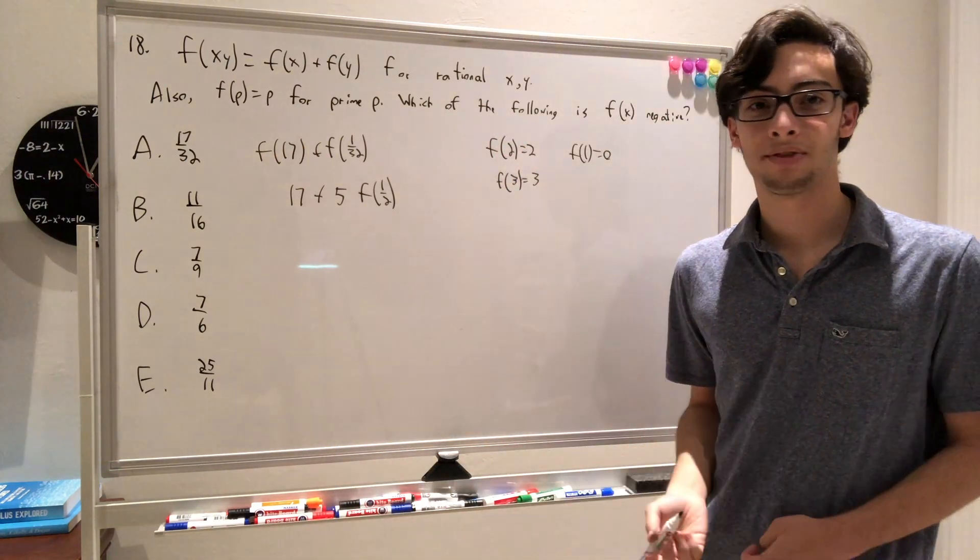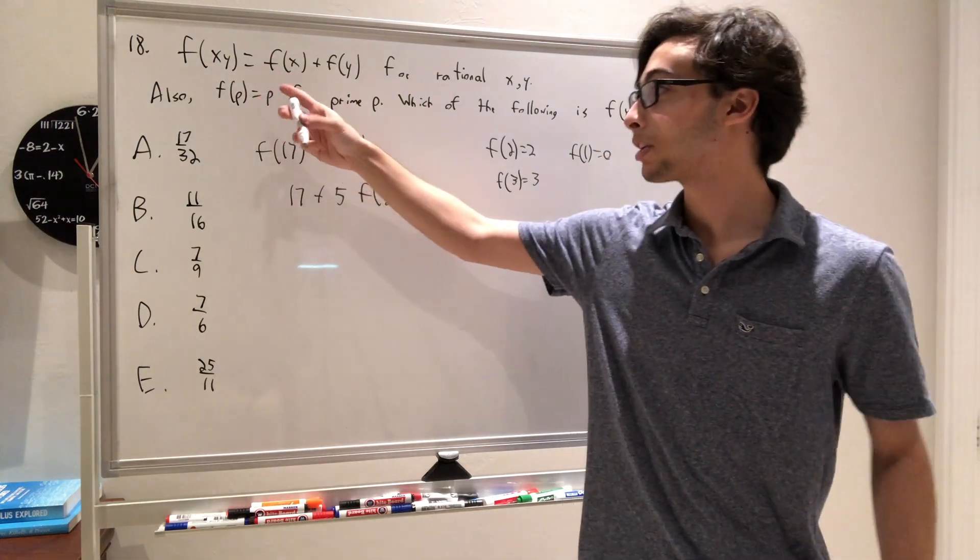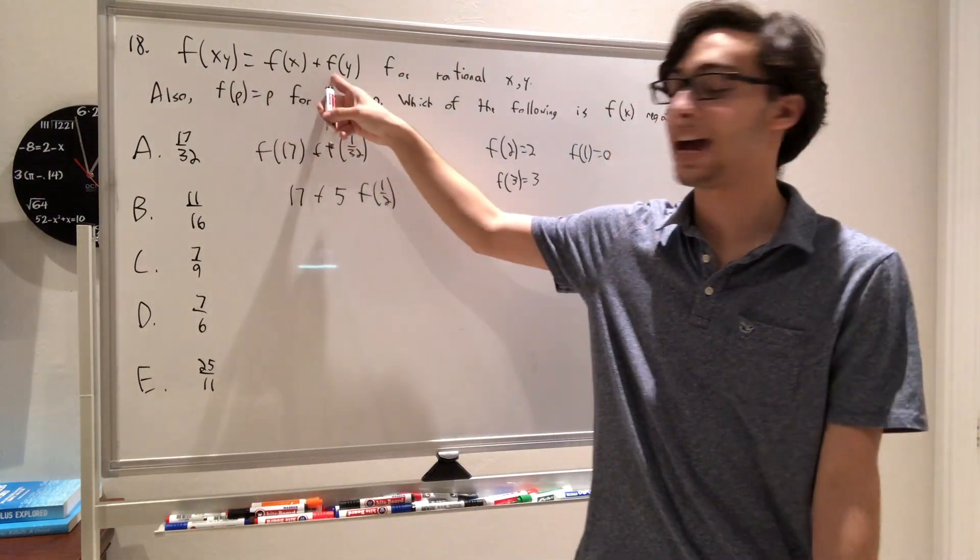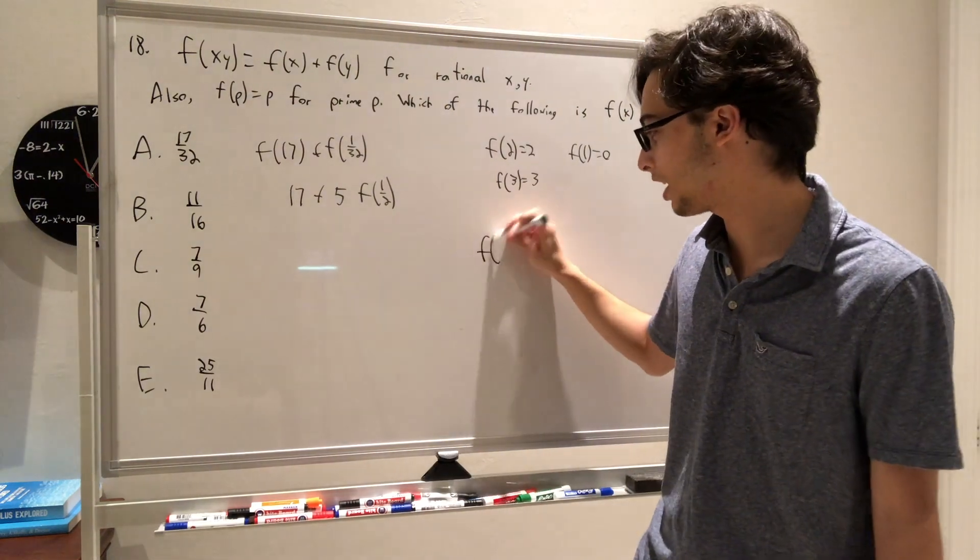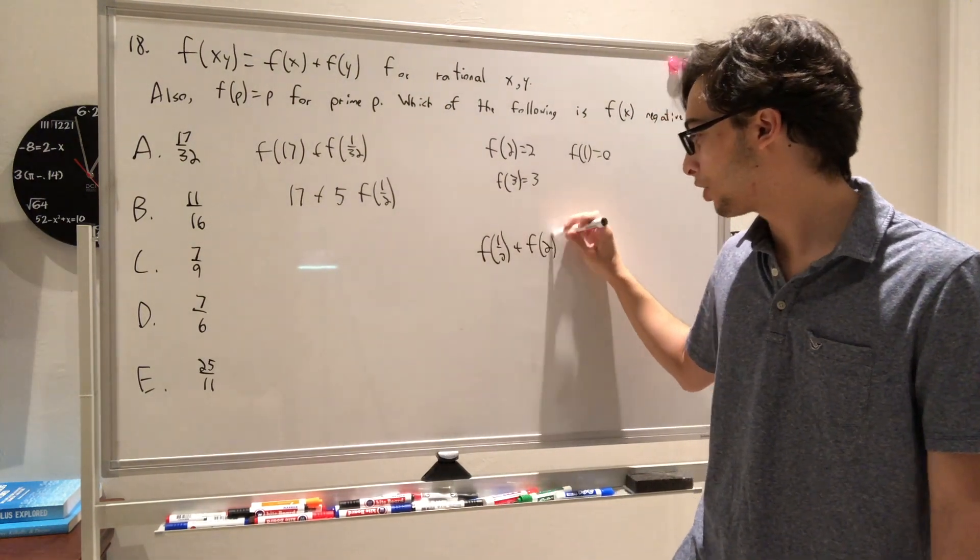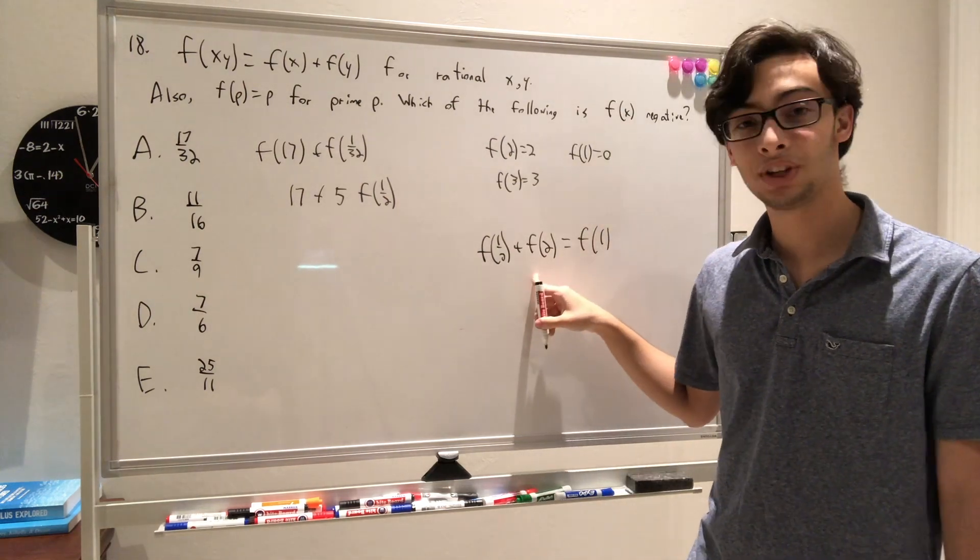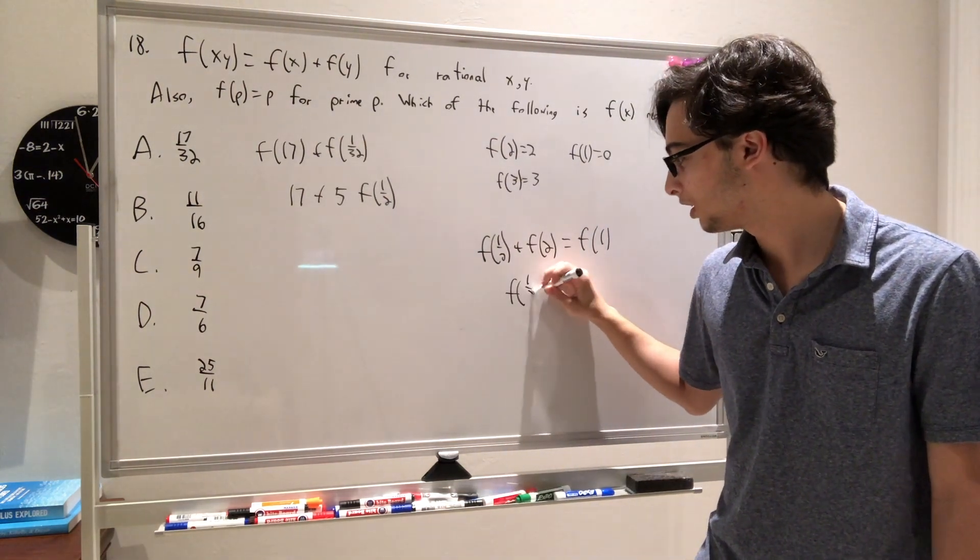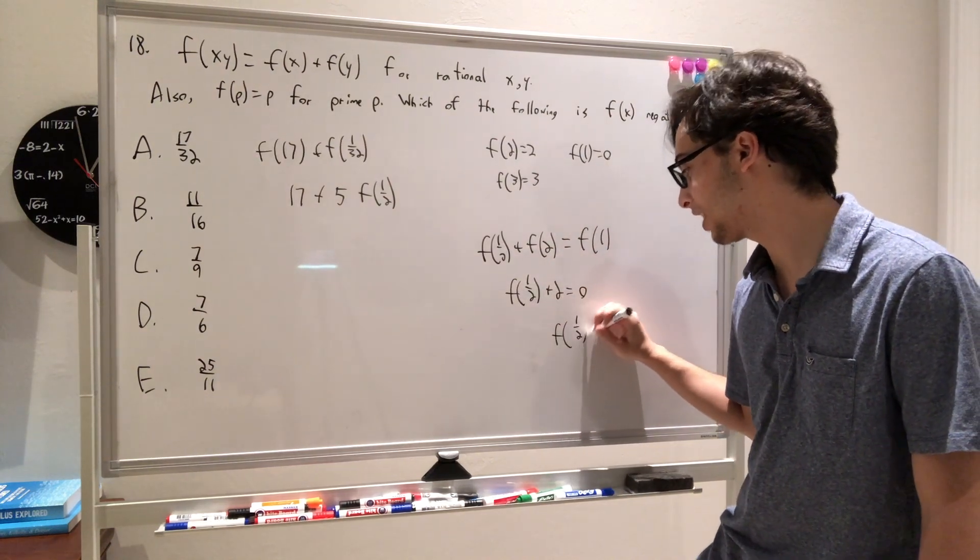Well, how can we find f of 1 half? Well, if we realize we want to use this rule, because if we had a 1 half here and let's just say we had an f of 2, we multiply those to get f of 1, and we already know f of 1. So we have f of 1 half plus f of 2 must equal f of 1. But f of 1 is 0, and f of 2 is 2, so we have that f of 1 half plus 2 has to equal 0, so that means that f of 1 half has to equal negative 2.